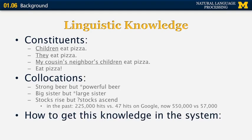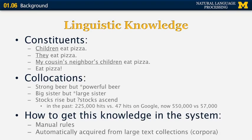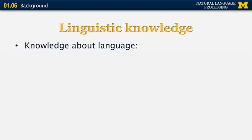So how do we get this kind of linguistic knowledge in the NLP system? There are essentially two approaches. One is some sort of manual rules that tell you big sister means this and large sister means something completely different, and you encode those as part of the knowledge of the system by hand. Or you can automatically acquire this kind of rules from large text collections, also known as corpora.